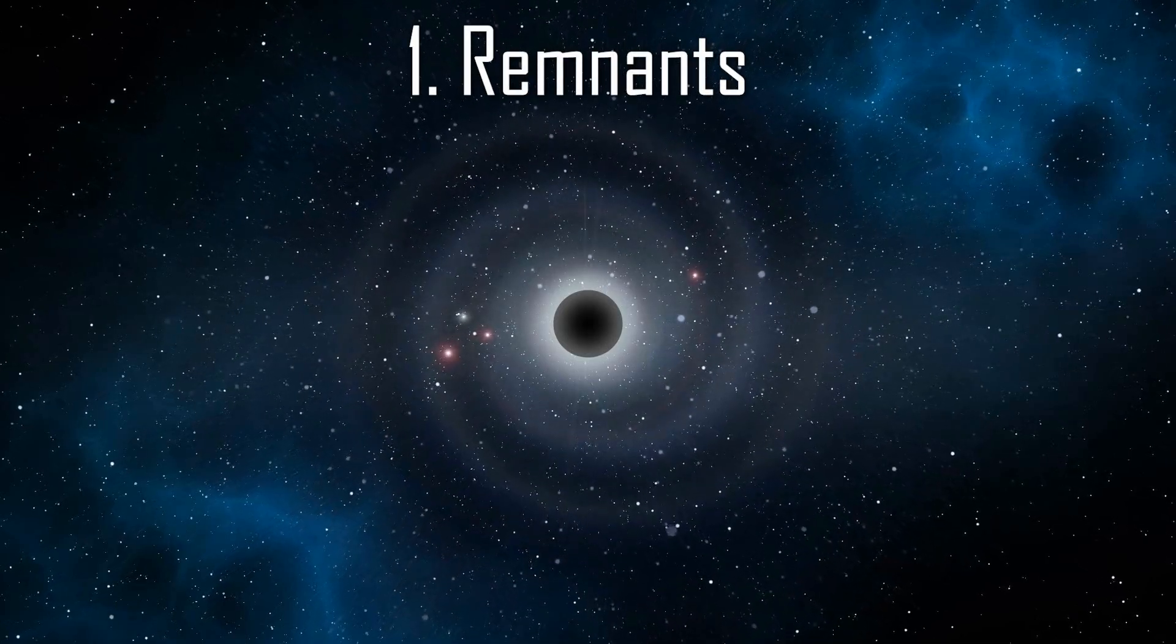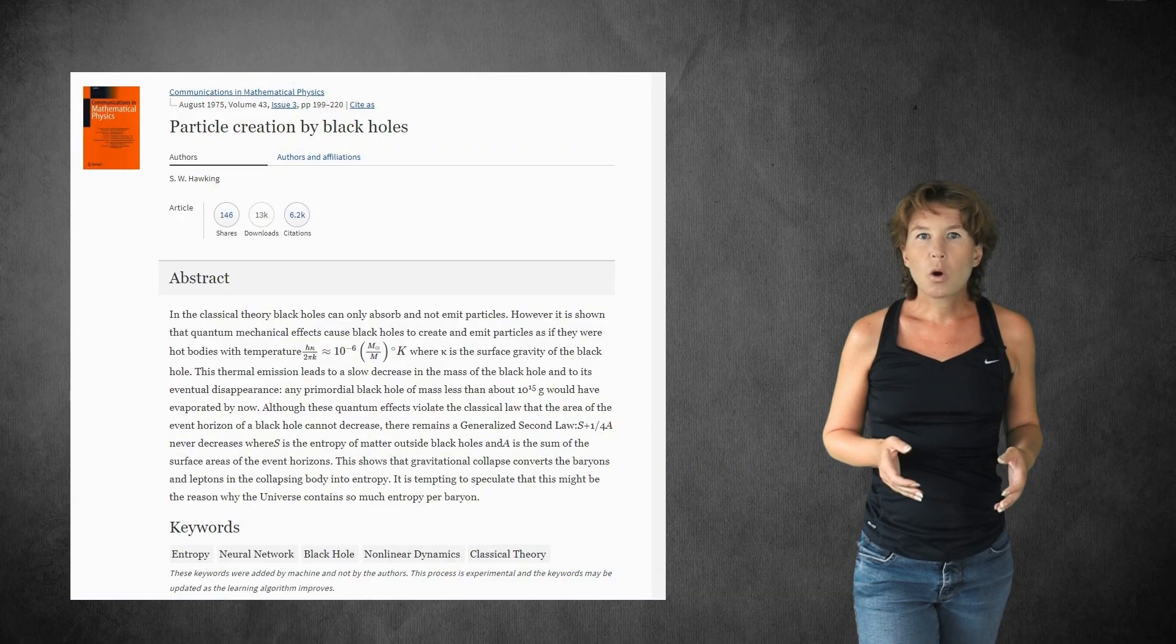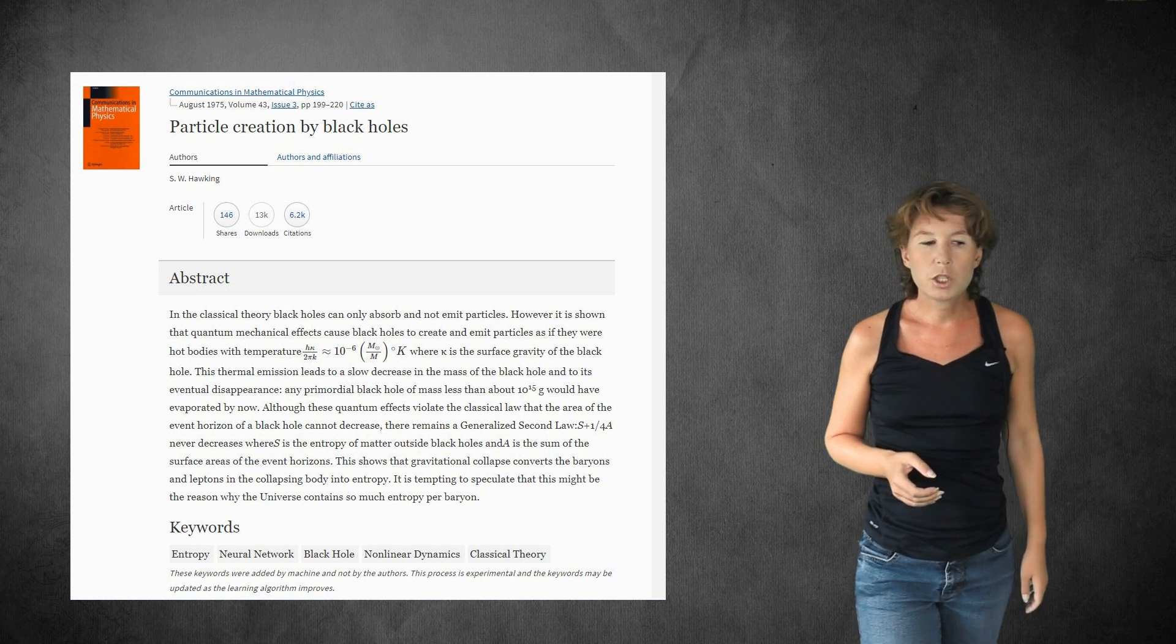First, remnants. The calculation that Hawking did to obtain the properties of the black hole radiation makes use of general relativity, but we know that general relativity is only approximately correct. It eventually has to be replaced by a more fundamental theory, which is quantum gravity. The effects of quantum gravity are not relevant near the horizon of large black holes, which is why the approximation that Hawking made is a good one. But this approximation breaks down eventually, and this happens when the black hole has shrunk to a very small size.